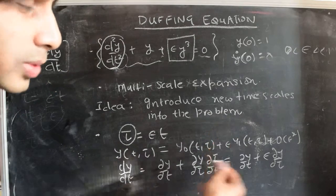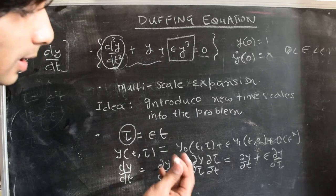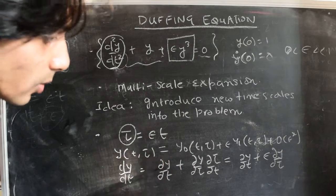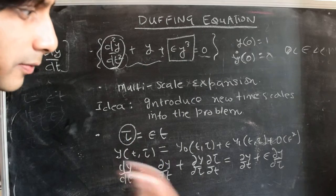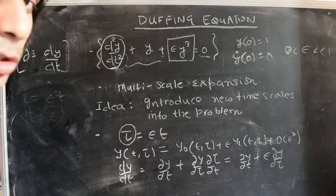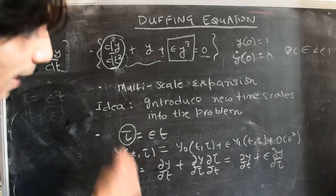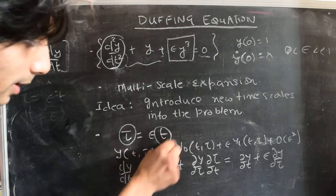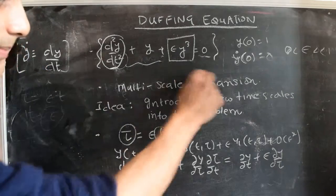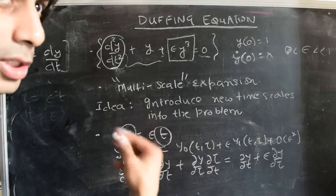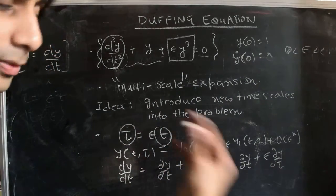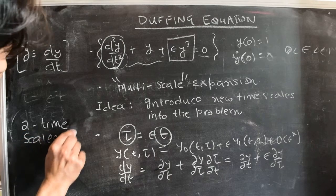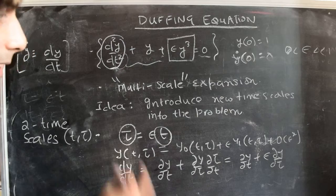The basic idea is to introduce a new timescale to the problem and then do an expansion, thinking of y as a function of both variables t and tau. We then solve the differential equations in a way that gets rid of the secular terms. Having introduced this timescale, we see that even to lowest order we have two timescales, t and tau — and hence the name multiscale expansion method.